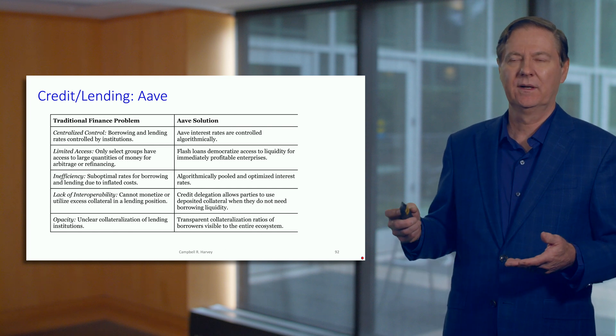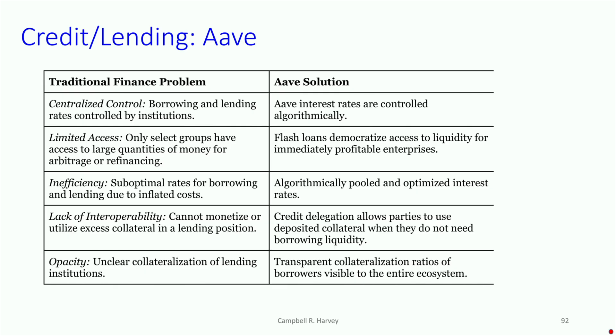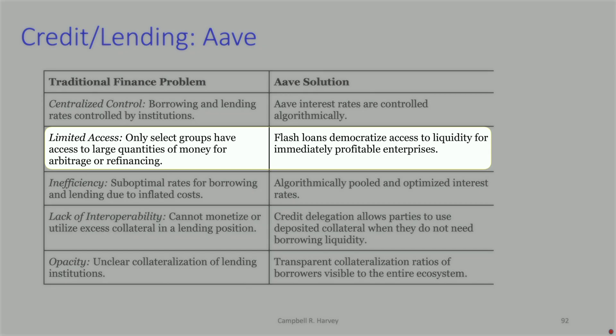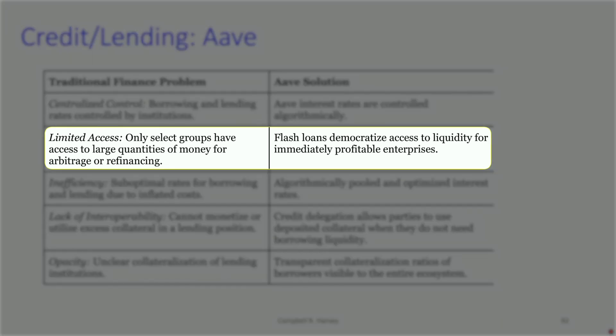Let's look at the traditional problems and what Aave is doing. For decentralized control, Aave has rates that are algorithmically set but with the possibility of being relatively stable. For limited access, we now have flash loans — the ultimate democracy in finance — where anybody can take one of these loans for an arbitrary amount, as long as it's paid back within the same transaction.